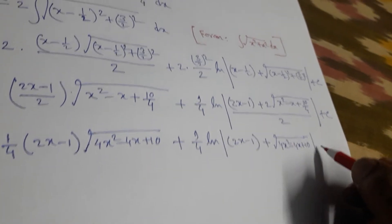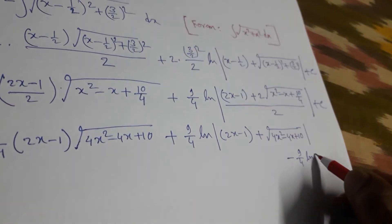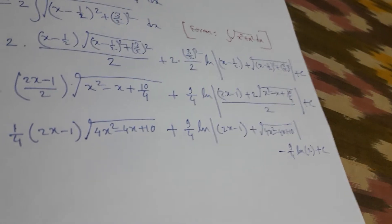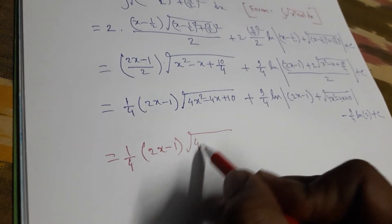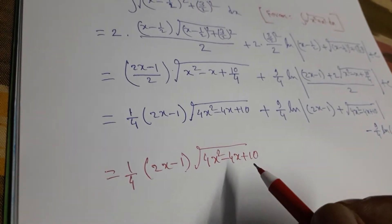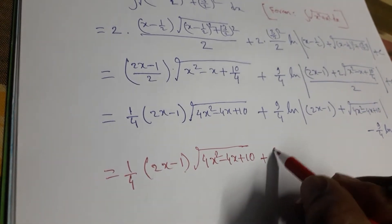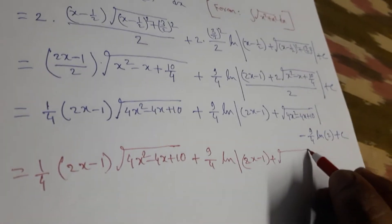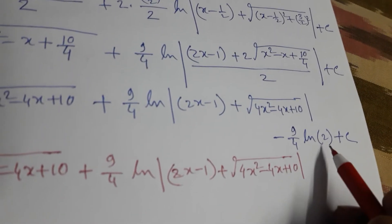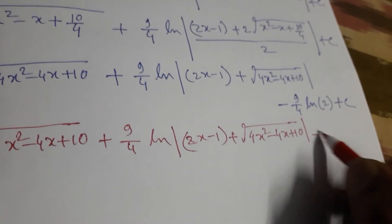So the result is (1/4)(2x - 1)√(4x² - 4x + 10) + (9/4) log(2x - 1 + √(4x² - 4x + 10)), minus (9/4) log 2, plus c. Since (9/4) log 2 is a constant, combining it with c gives a new constant c₁. This is the final answer for the given problem.